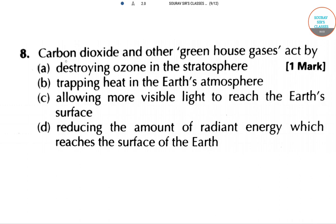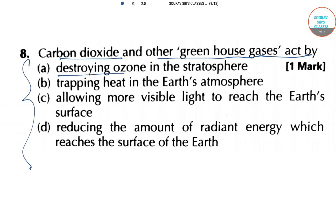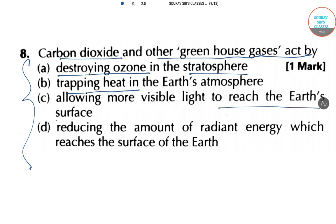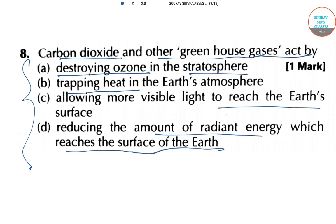In the next question: carbon dioxide and other greenhouse gases act by which of the following? The options are: destroying ozone in the stratosphere, trapping heat in the earth's atmosphere, allowing more visible light to reach the earth's surface, or reducing the amount of radiant energy that reaches the surface of the earth. The answer is option B — trapping heat in the earth's atmosphere — because greenhouse gases allow solar energy to come in but prevent its reflection.